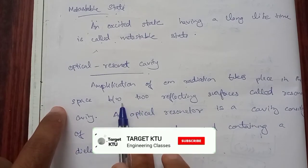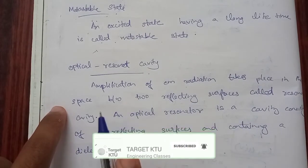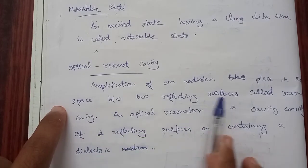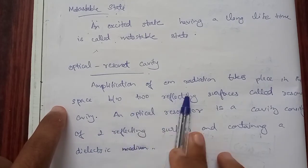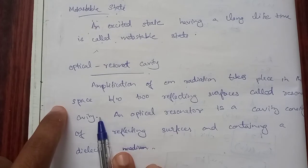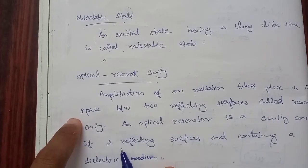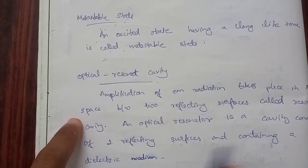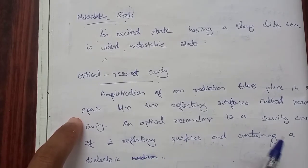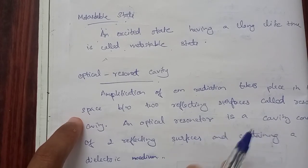The space between the two reflecting surfaces is the resonant cavity. An optical resonant cavity is a cavity consisting of two reflecting surfaces and containing a dielectric material. One surface acts as a full reflector and the other as a partial reflector, forming the resonant cavity.